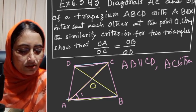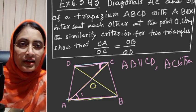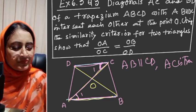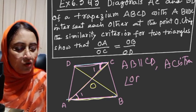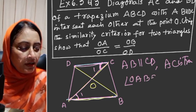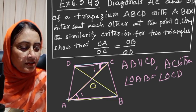Since AB is parallel to CD and AC is transversal, therefore this angle is equal to this angle. That means angle OAB is equal to angle OCD.